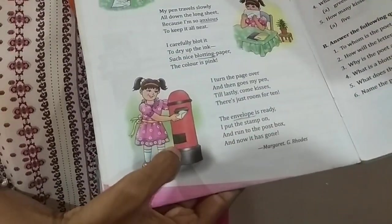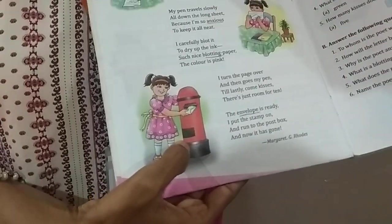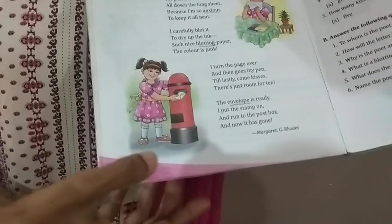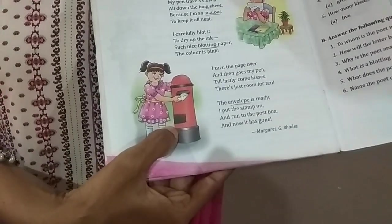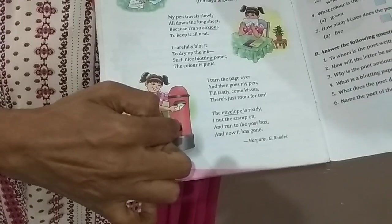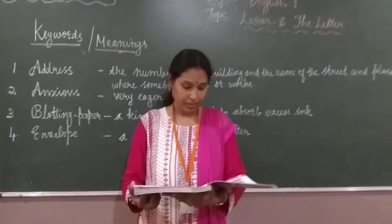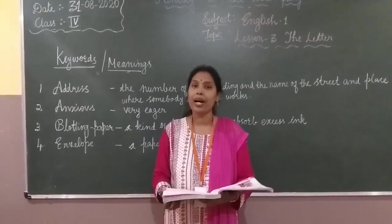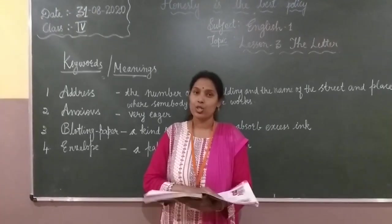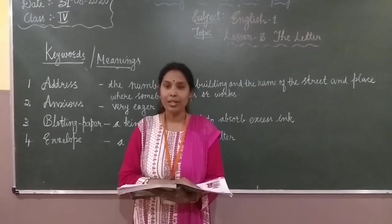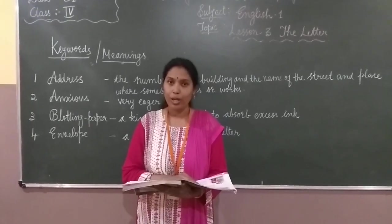This may not be familiar for you right now. Sometimes you can observe while going out — you can see a post box in front of the post office. After the envelope is ready and the stamp is on, you put the letter inside the post box, and it will be sent to the mother. This poem was written by Margaret G. Rhodes. I hope you all understood how the poetess has written the letter to her mother. All of you read this poem very well.